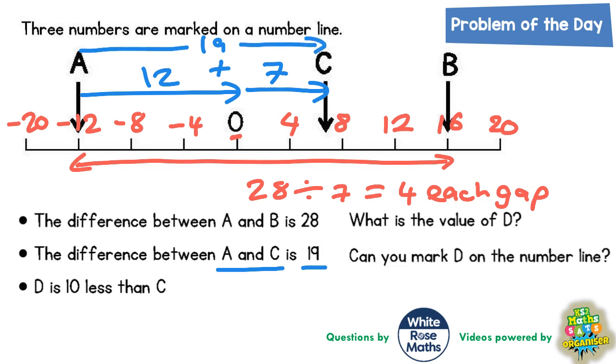Therefore, C must be seven above zero. So C must be pointing towards the number seven.